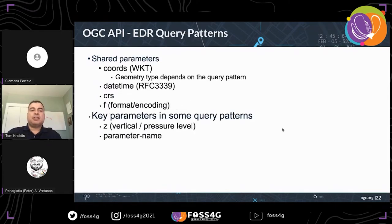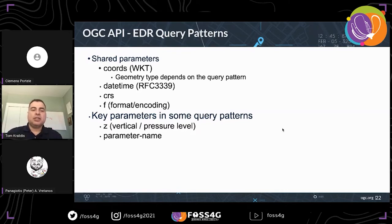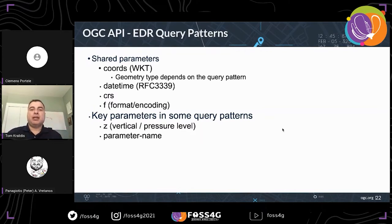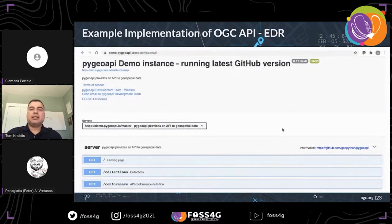Shared parameters across all query patterns include coordinates, using well-known text; datetime using RFC 3339; coordinate reference system; and output format. Many query patterns also support a Z parameter for vertical level or pressure level, as well as a parameter name for weather variables or monitoring elements.